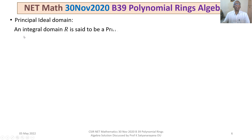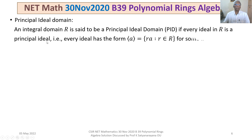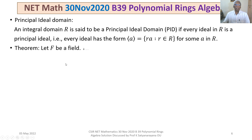Let us first recall what a principal ideal domain is. An integral domain R is said to be a PID if every ideal in R is a principal ideal. A principal ideal means every ideal has the form generated by a single element A, that is, the set of all multiples of A — R·A where r belongs to R, for some A in R. Therefore every ideal is a principal ideal, and R becomes a PID.